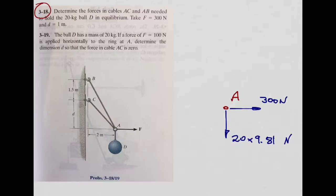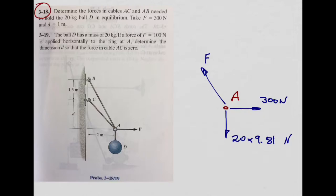The units of the weight are also Newtons of course. We also need to include the forces in cables AC and AB. For cable AB, we have force vector FAB. The other force is the force in cable AC, FAC. Those are all the forces we have at point A.